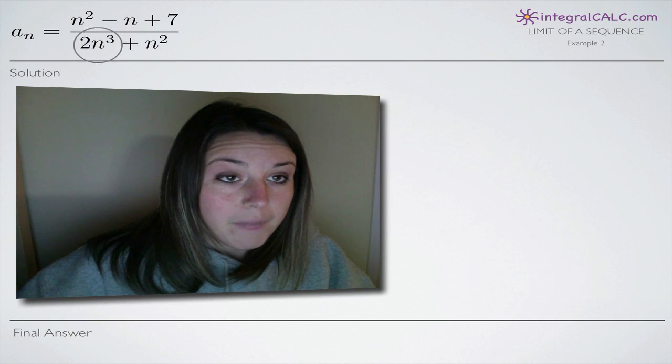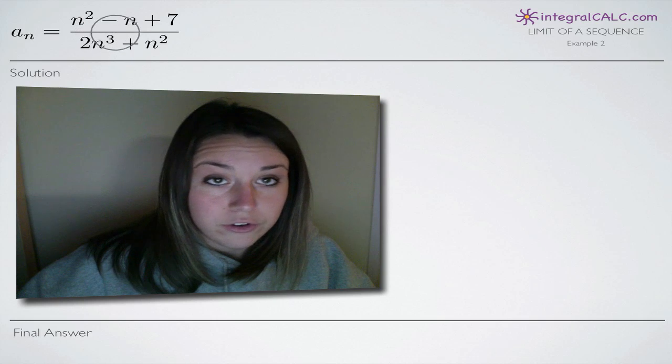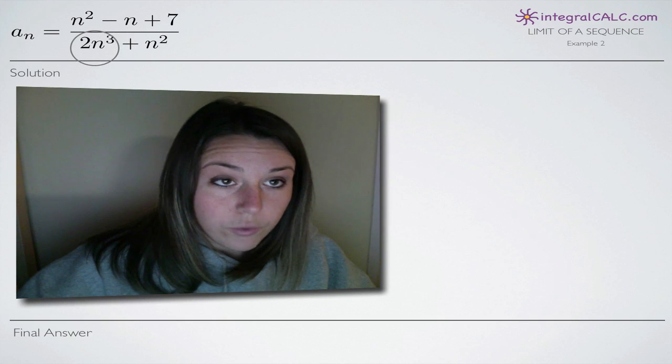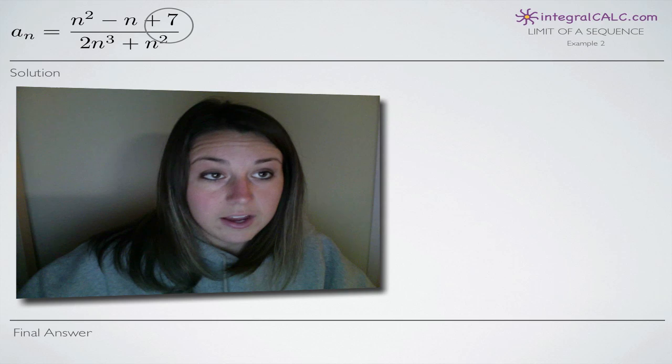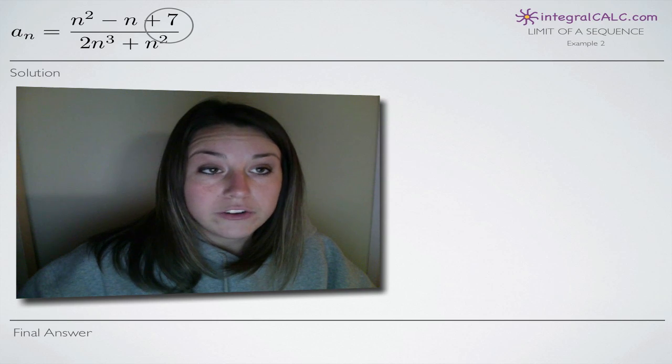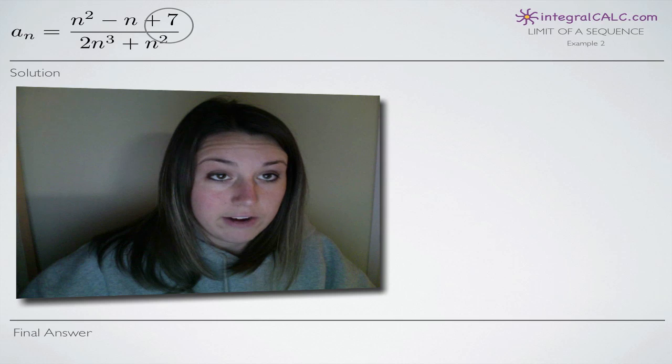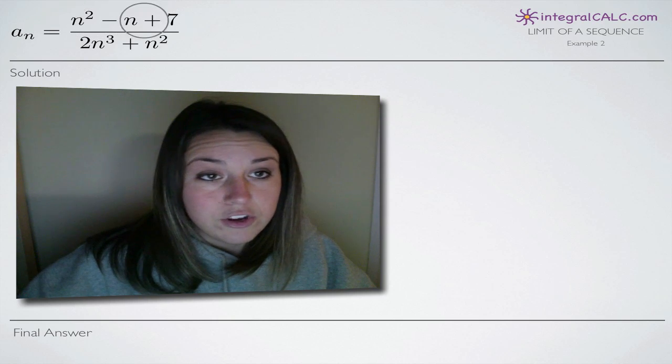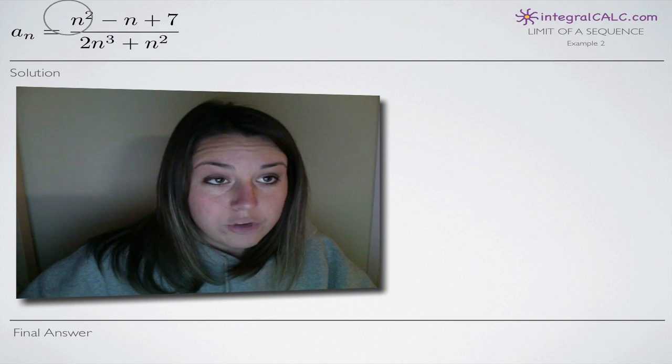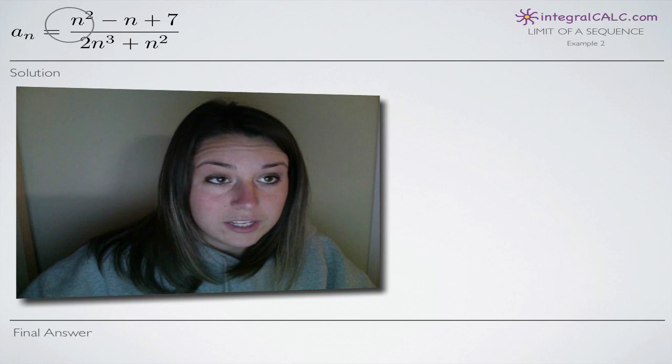So in this case, n cubed is our highest degree variable. So we want to divide through by n cubed and the reason is because we want to take n out of the numerator and put it in the denominator. I'm not talking about the numerator here and denominator here but instead, the numerator and denominator of each particular term.